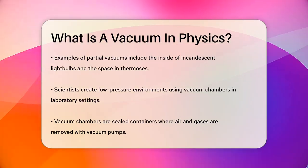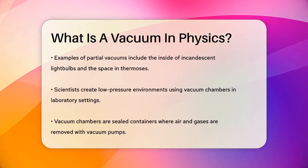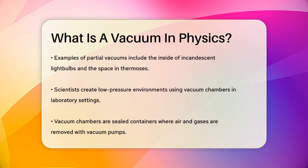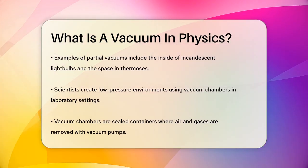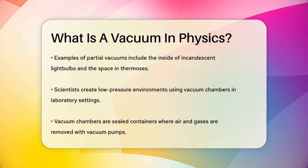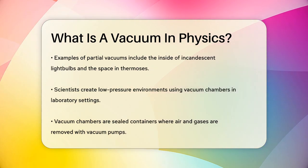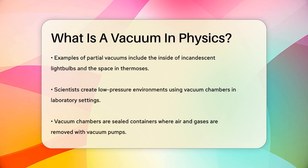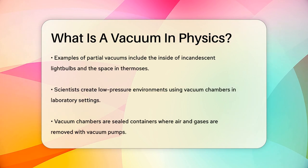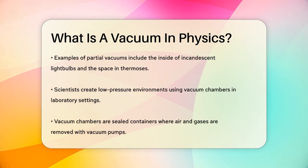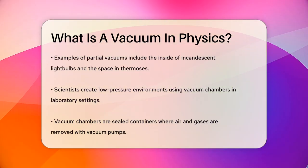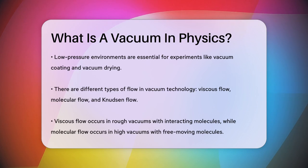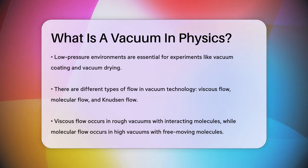In laboratory settings, scientists use vacuum chambers to create environments with very low pressures. These chambers are sealed containers from which air and other gases are removed using vacuum pumps, creating a low-pressure environment that is essential for certain experiments and processes like vacuum coating or vacuum drying.